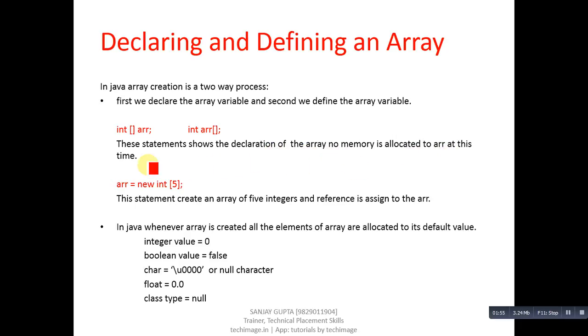These statements show the declaration of the array - no memory is allocated to arr at this time. This is the purely declaration statement. Now arr equals to new int[5] - this statement is allocating memory to this arr array.